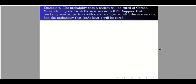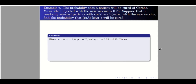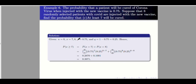Letter c: at least seven will be cured. Since n equals 8 and at least seven means x equals 7 and x equals 8 only, we do not need to use complementation — complementation is only used when the solution is long. With only two values to compute, the answer is 0.3671. You may pause the video and use your calculator to check these values.